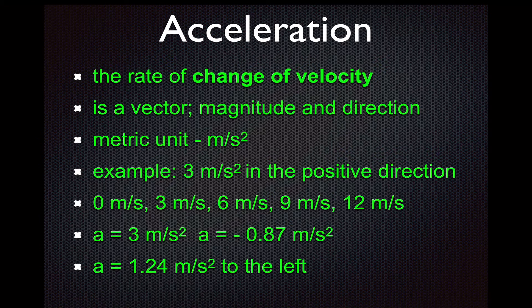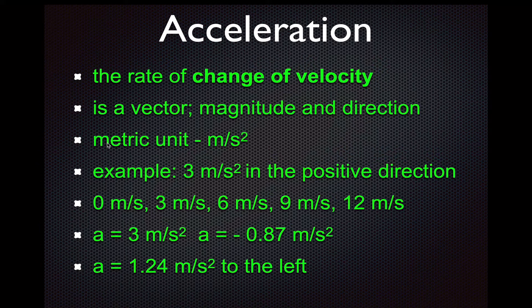Acceleration is a vector quantity, which means it must be described by its magnitude and its direction — you have to have a number and a direction. The metric units for acceleration are meters per second squared. Some people have a hard time understanding what that means. All it means is that your velocity, which has units of meters per second, is changing over time per second — so it's like meters per second per second.